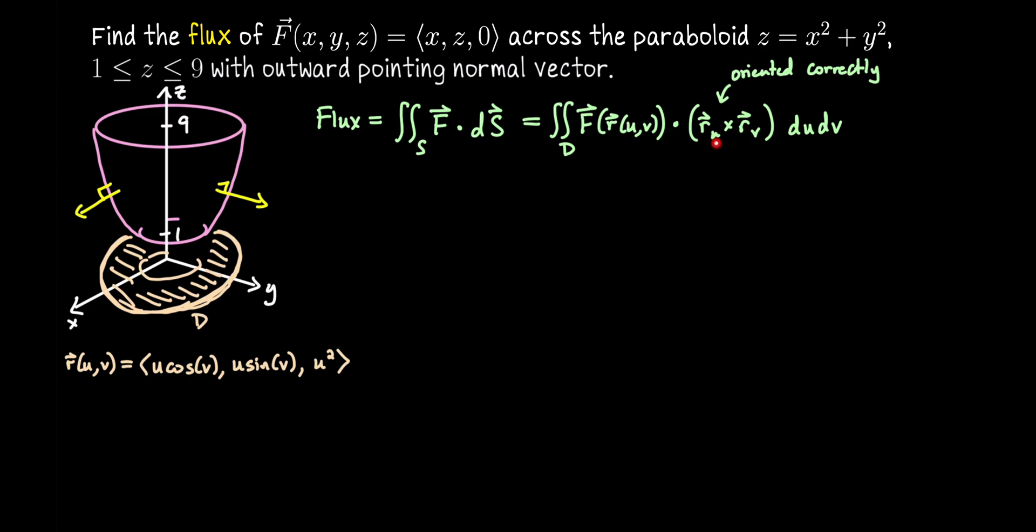Now we want to compute the cross product. So we need these vectors r_u and r_v. That involves taking the partial derivatives of this parametrization with respect to the parameters. So r_u will be cosine v, sine v, 1, and then r_v will be negative u sine v, u cosine v, 0. I just realized I did my u derivative wrong. I was thinking the third coordinate was u, but it's u². So I should have written 2u up here.